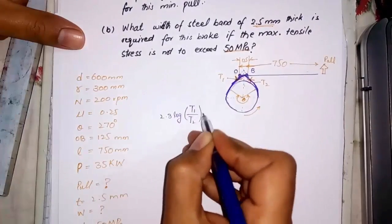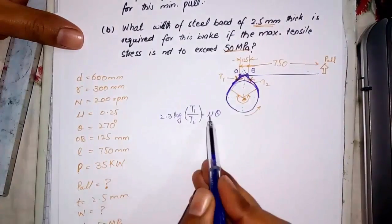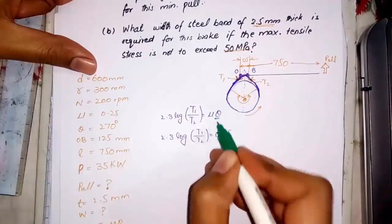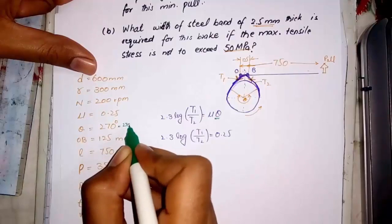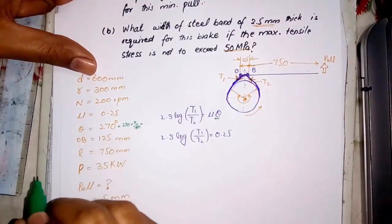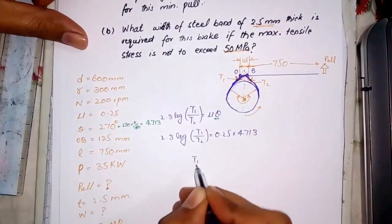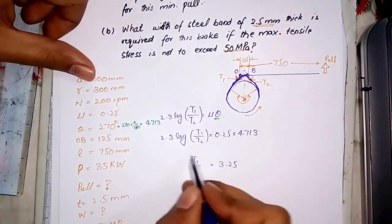First find out tensions. In question theta is in degrees but in relation it would be used in radian.